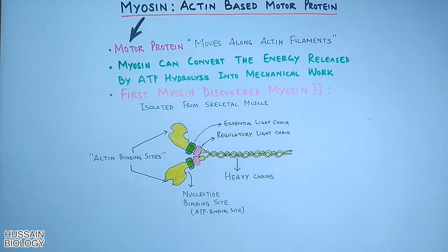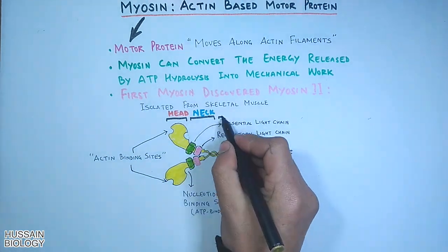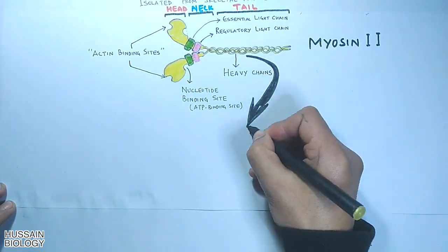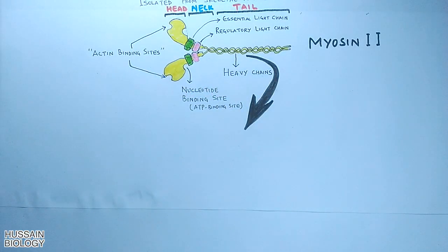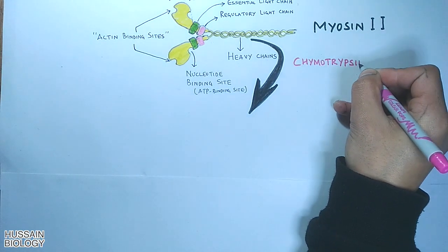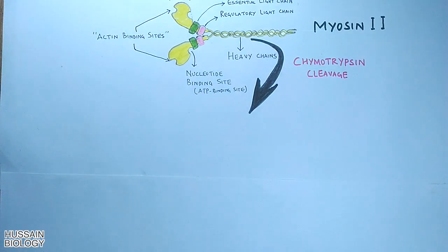Myosin protein has three basic regions: the head, the neck, and a tail. To determine how many regions or parts there are, we put the myosin protein through proteolytic cleavage, which reveals all its structures. First, proteolytic cleavage is done by chymotrypsin, which is termed as chymotrypsin cleavage.